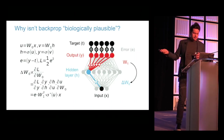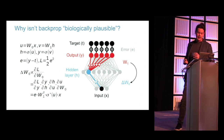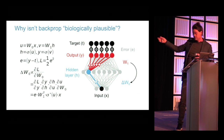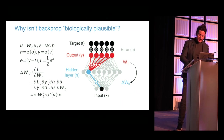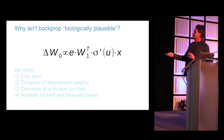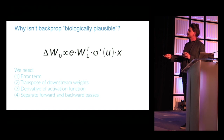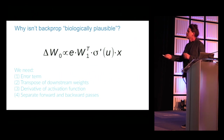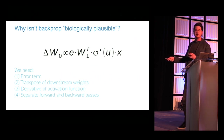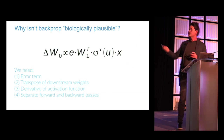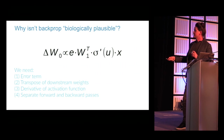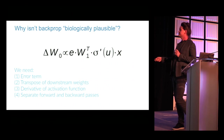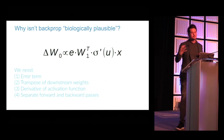So why isn't Backprop biologically plausible? This is the chain rule we use to arrive at Backprop. The issues — and people have their pet issue — but the big ones are that you're sending around signed error terms through the network, you're using the transpose of downstream weights to adjust earlier weights, you use derivatives of activation functions, and there are separate forward and backward passes.